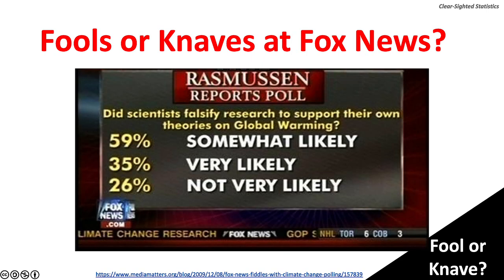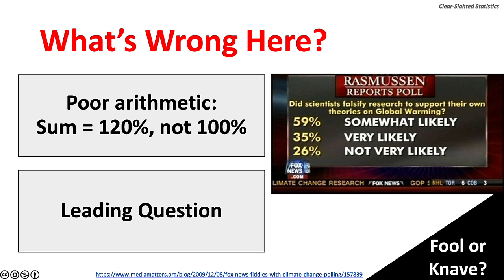Here is Fox News reporting on a Rasmussen survey asking whether scientists falsified research to support their own theories on global warming. Respondents had three choices: somewhat likely, very likely, or not very likely. Two things are wrong: first, poor arithmetic — the sum of the three categories is 120%, not 100%. Second, the question is a leading question. The poor arithmetic is grounds for concluding Fox News is foolish, but the leading question is pure knavery that shows Fox News wants to undermine the reputation of climate scientists.